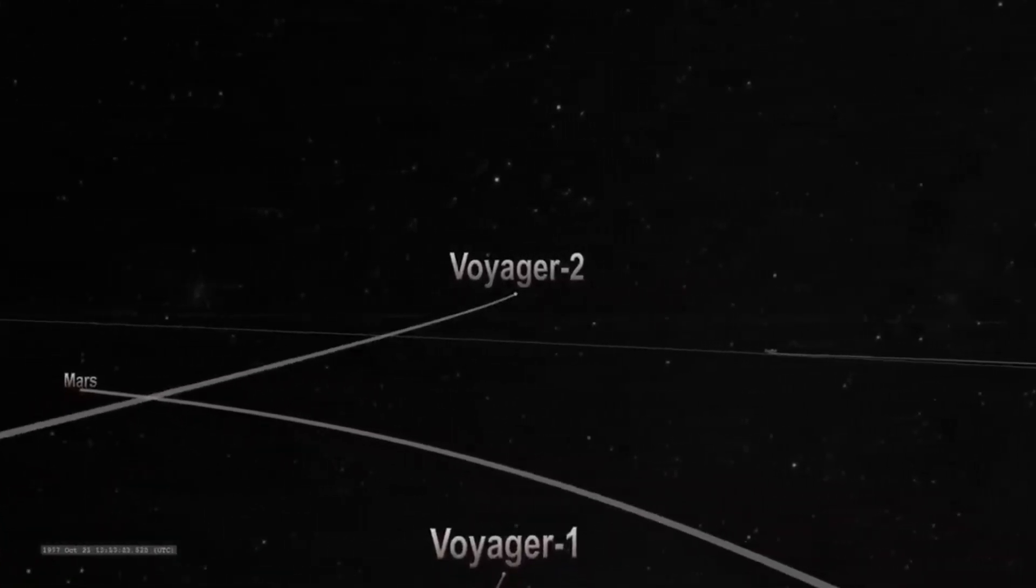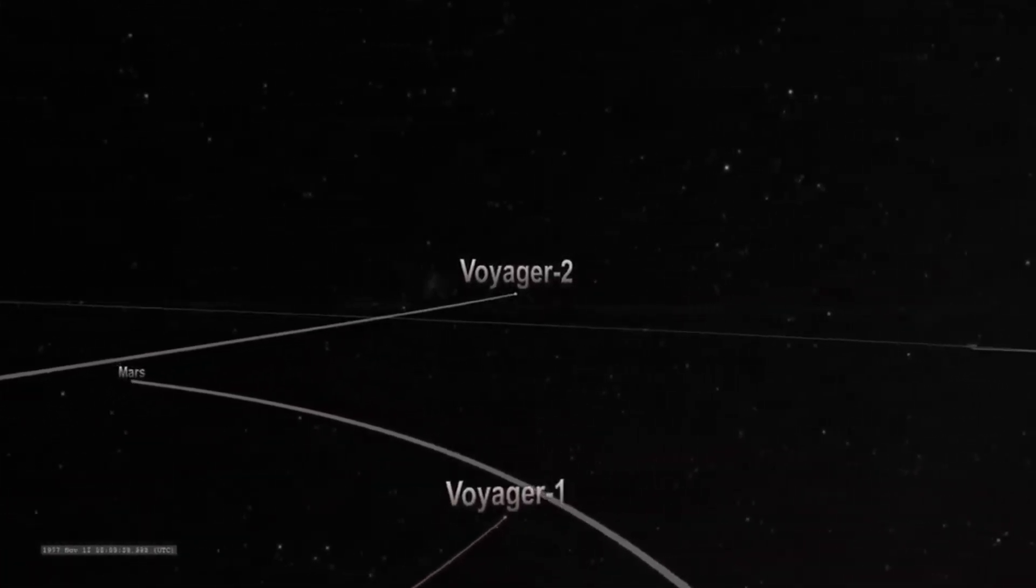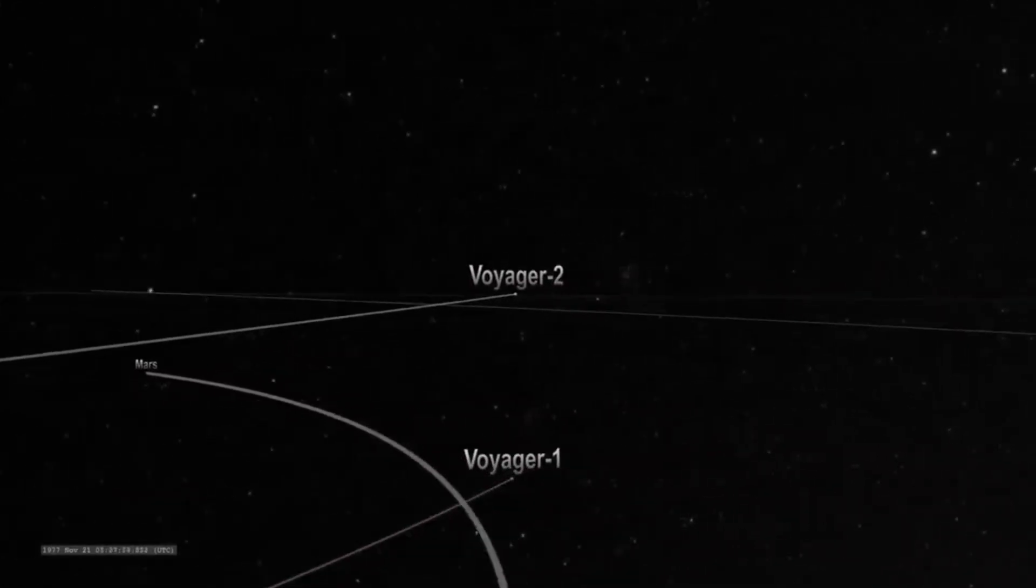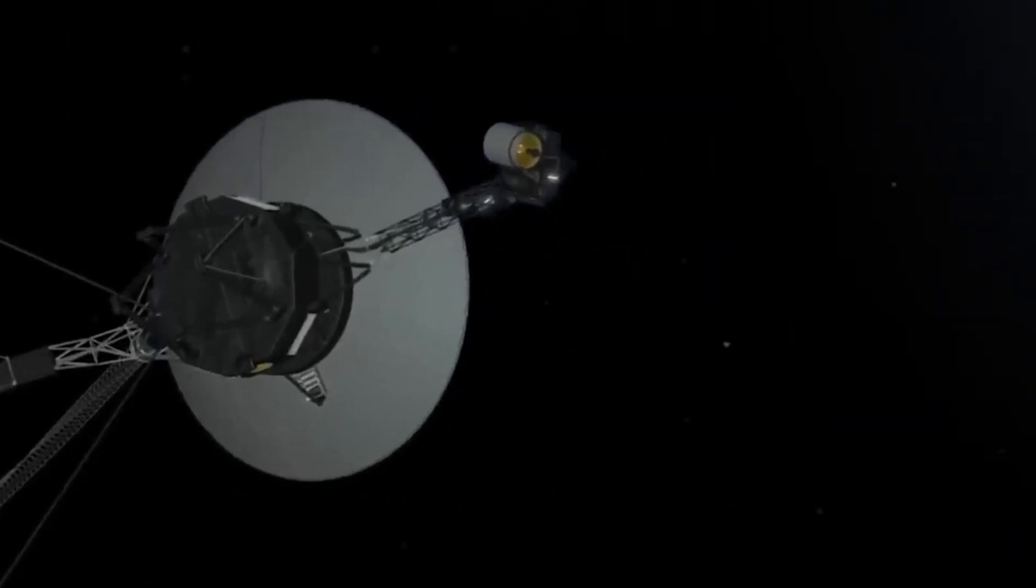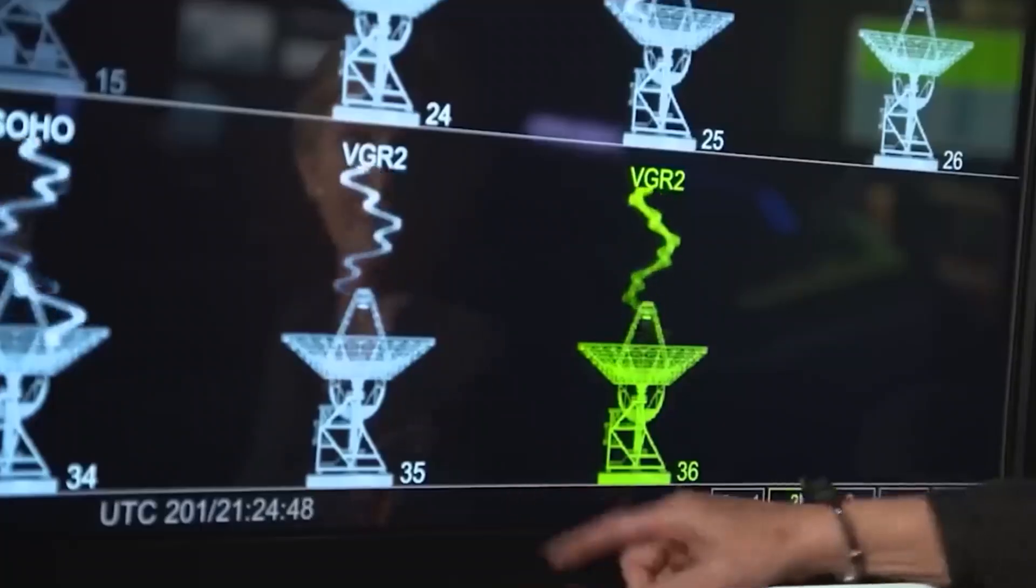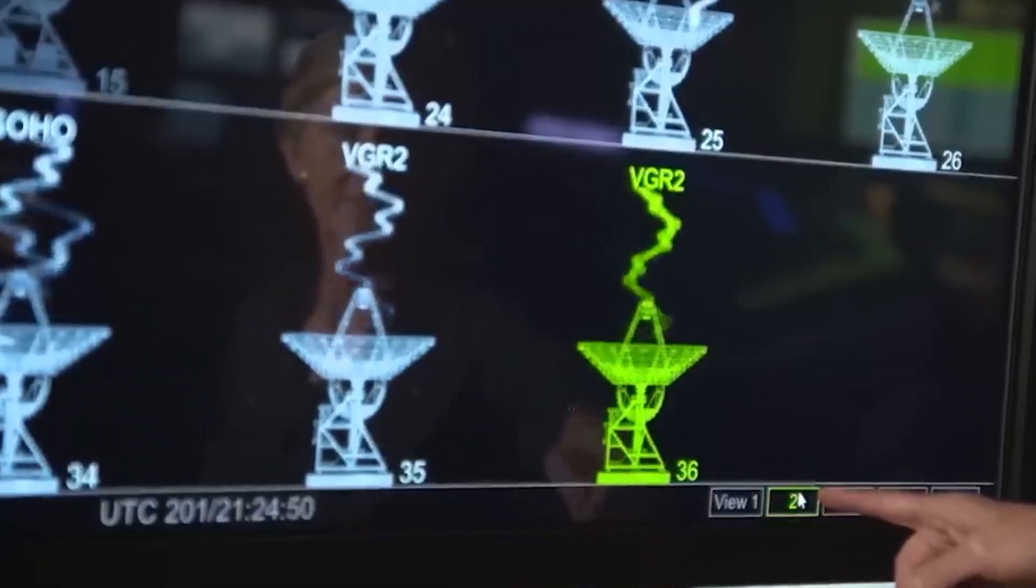In 2018, Voyager 2 also crossed the heliopause on November 5. This time there was no doubt—the spacecraft's plasma instrument was working properly and recorded the increase in the density of particles such as protons, electrons, and other charged particles.